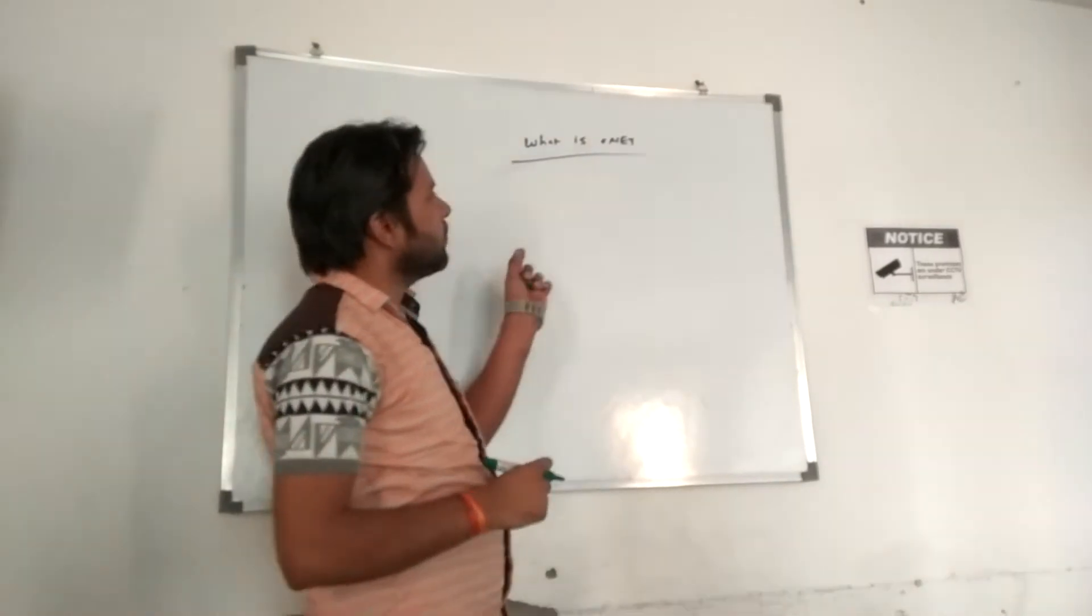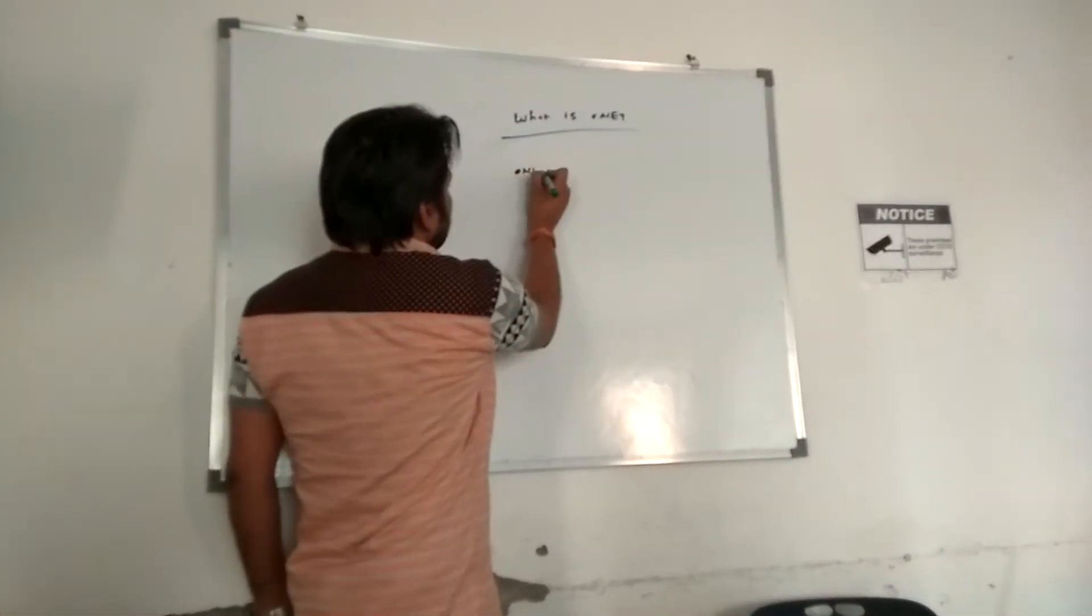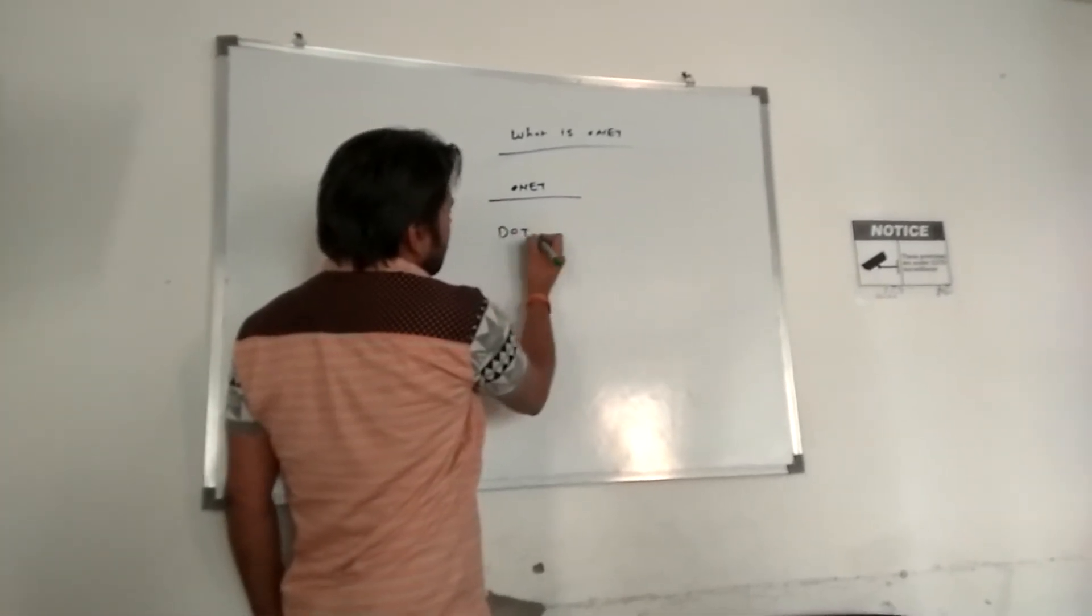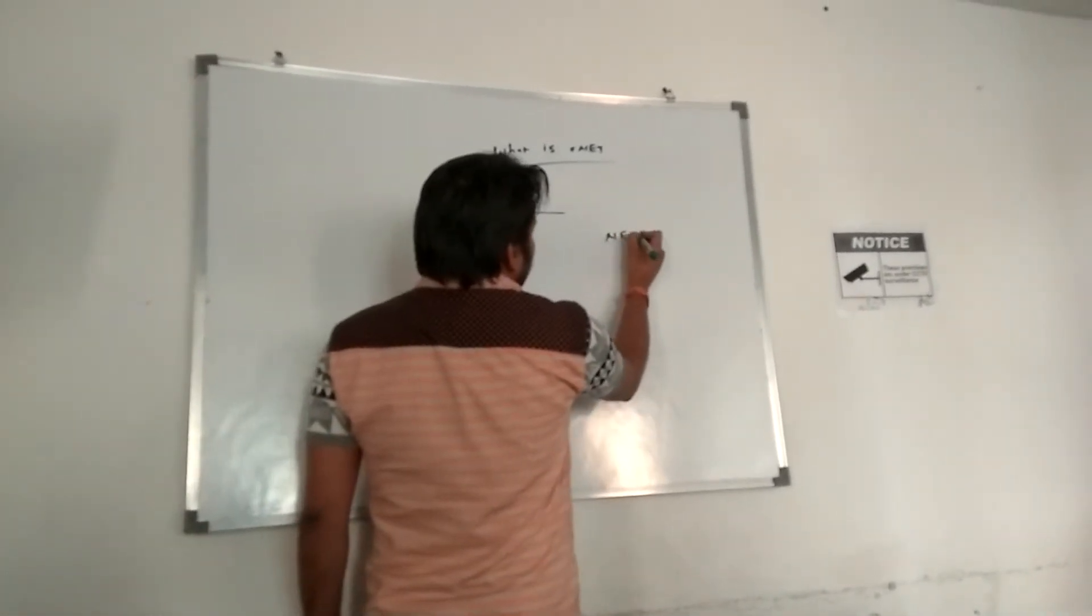What is the full form of .NET? .NET relates to two different ones. First one is a dot, and second one is a net.